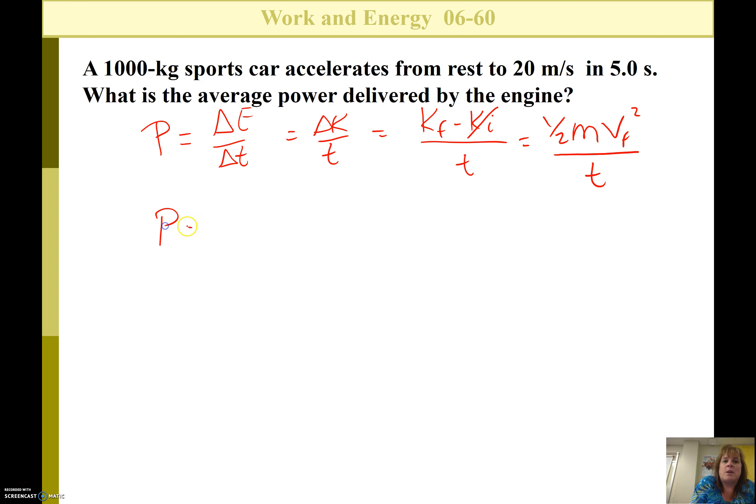Now we just plug our numbers in. One-half times 1,000, the mass of the car, times 20 squared, that's going to be a big number, divided by 5. If we do that math, you're going to get 40 kilowatts or 40,000 watts.